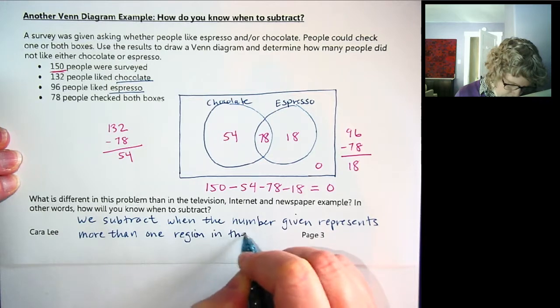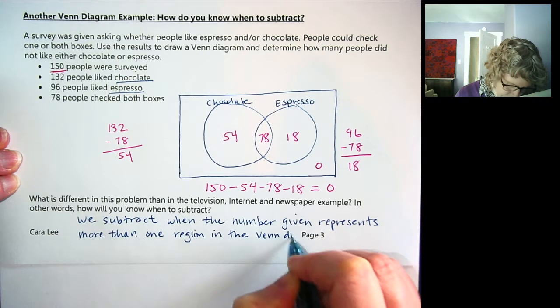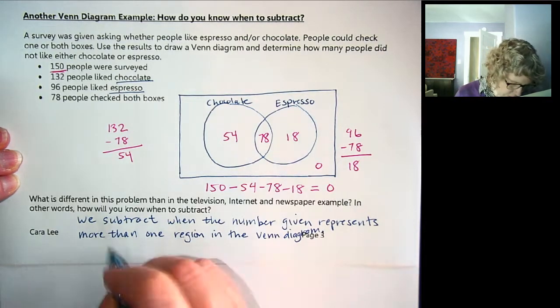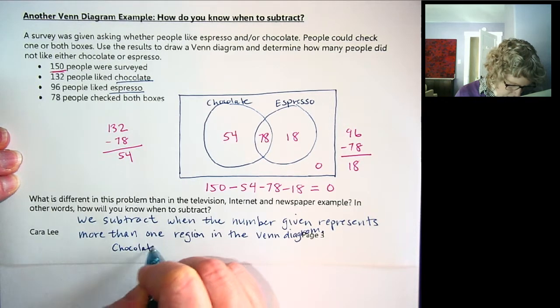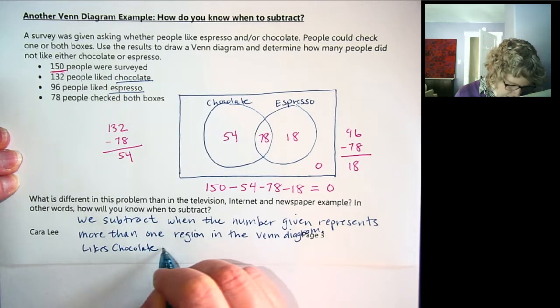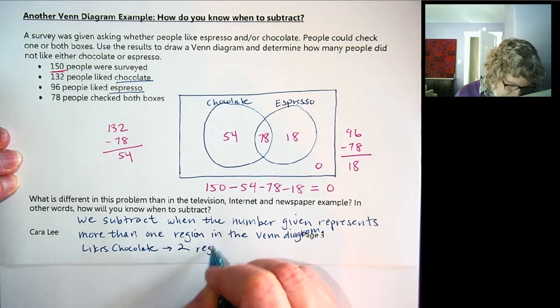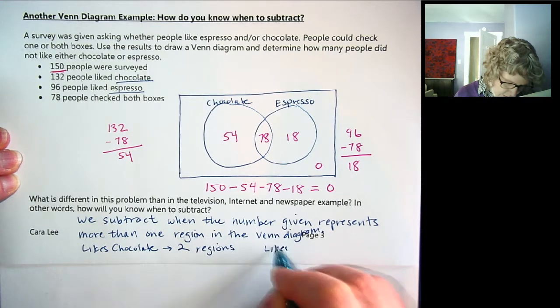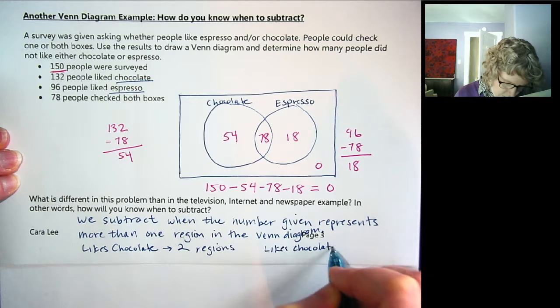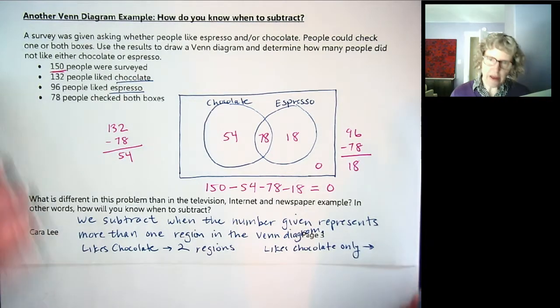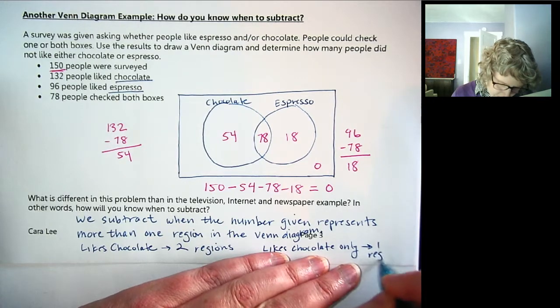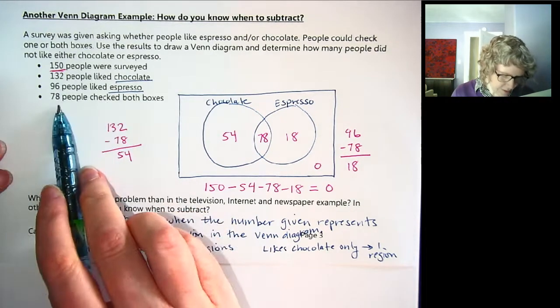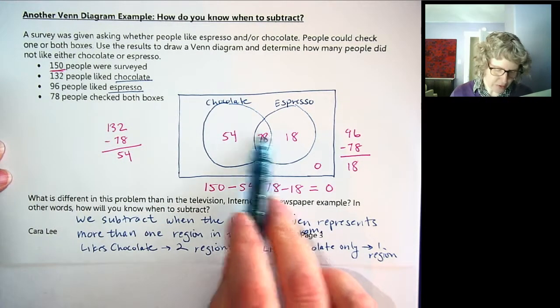in the Venn diagram or of the Venn diagram. Okay, so for example, chocolate or let's say likes chocolate is two spaces or two regions. But if it said likes chocolate only, that is only one region. That's only one region. Checking both boxes, that's only one region. That's why we were able to do that one first.